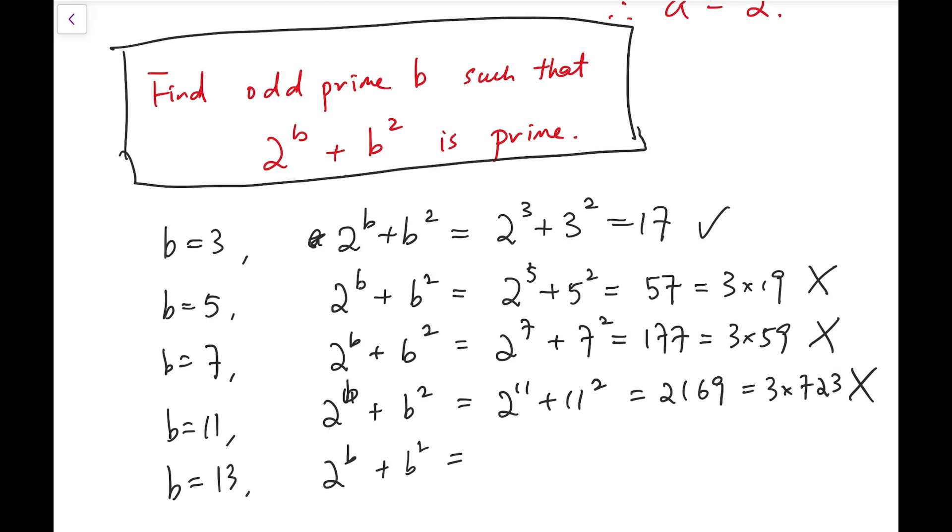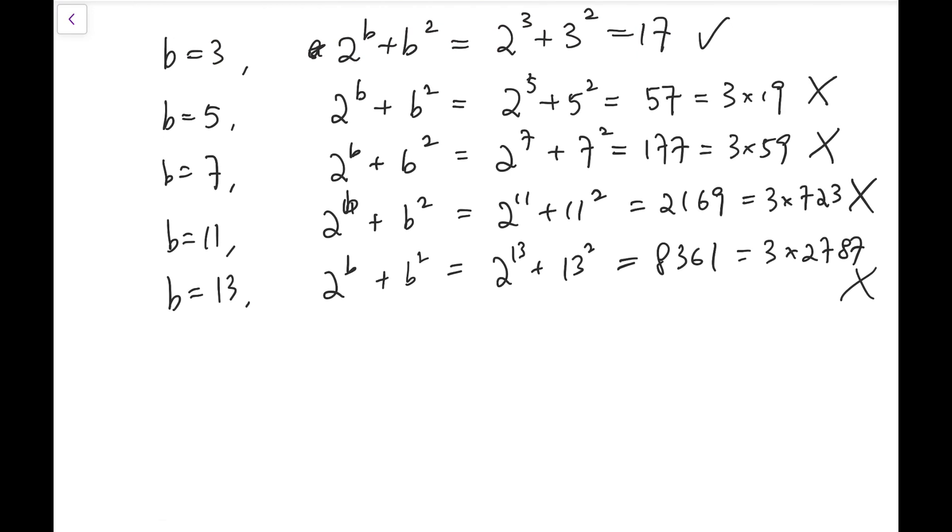Now at this point, you might have observed the pattern already. For 2 to the power of 13 plus 13 squared is 8192 plus 169, so that's 8361, and that's 3 times 2787. I'm not sure whether you have the same thing as I do in your mind, but when B is a prime that is not equal to 3, this expression will always take a value that is a multiple of 3. So maybe we can try to prove that this expression is for most of the time a multiple of 3.